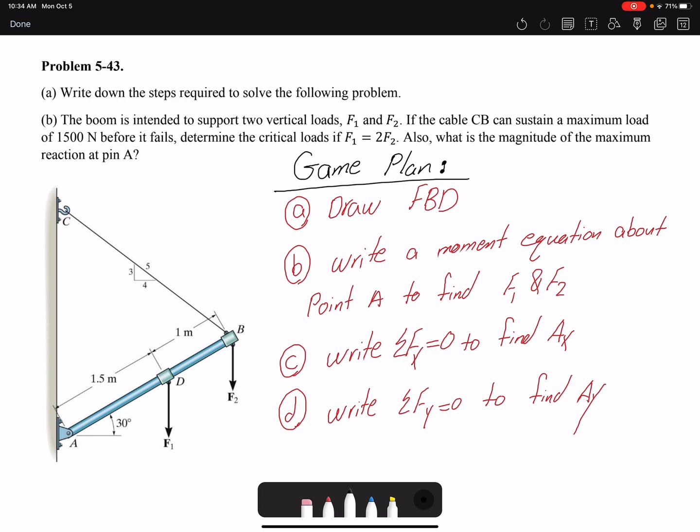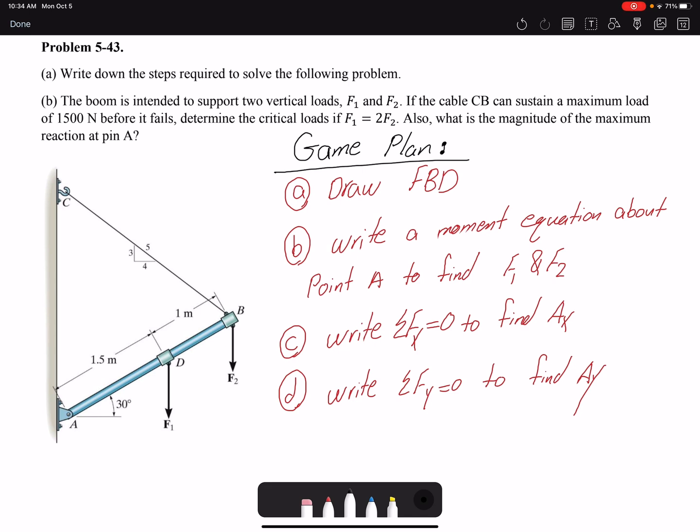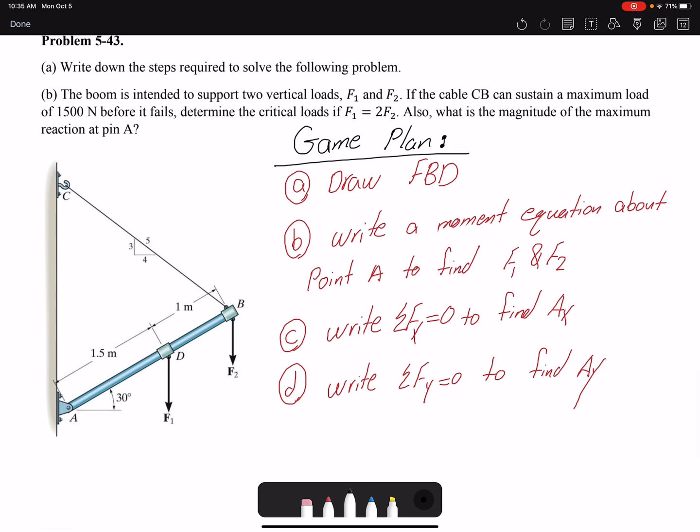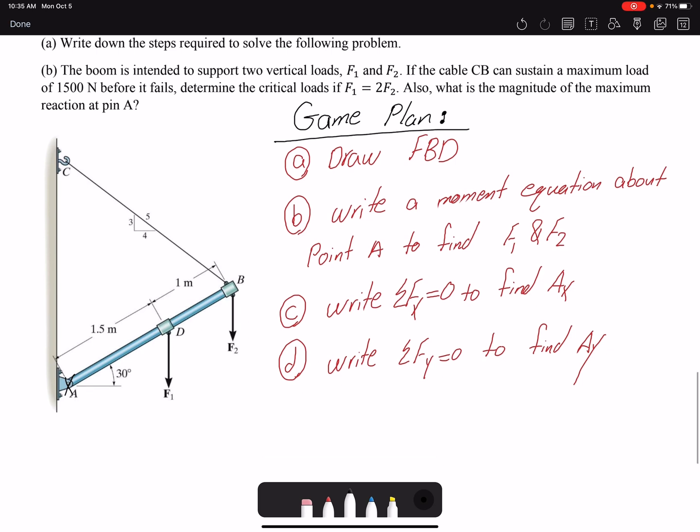I've added a step A to this problem because it's important to have a game plan before you write all the equations and plug numbers into your calculator. The game plan is pretty simple: we need to draw the free body diagram. A good free body diagram including all the forces and moments is half of the problem. Then write a moment equation about point A to find F1 and F2. Then write a force equation along x to find Ax, and then write a force equation along y to find Ay.